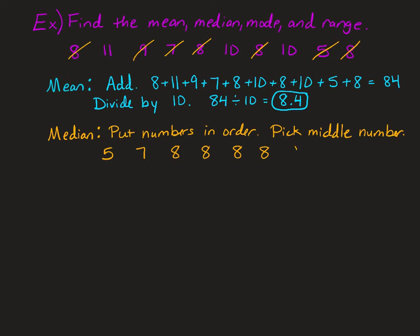Then 9, then 10, 10 again, and 11. So we've written all the numbers. And look, there's 10 numbers, so there's actually going to be two numbers in the middle. So we have 8 and 8, and the middle between those is 8.